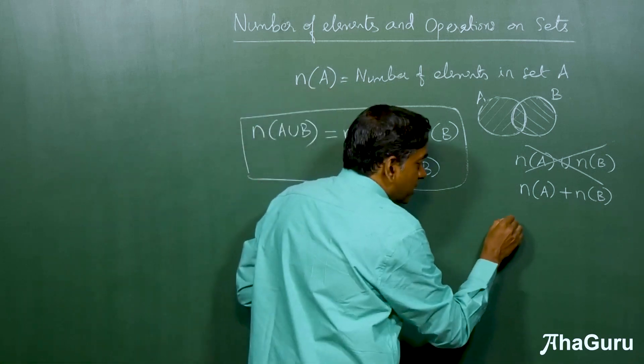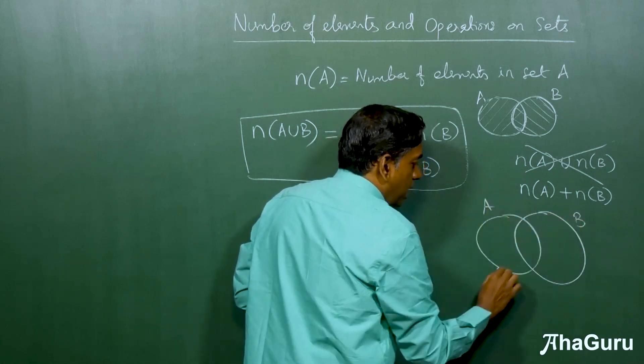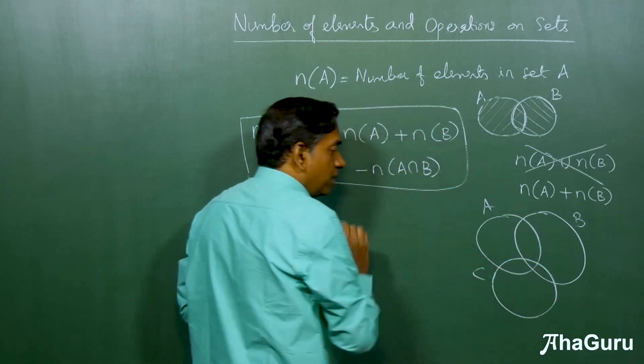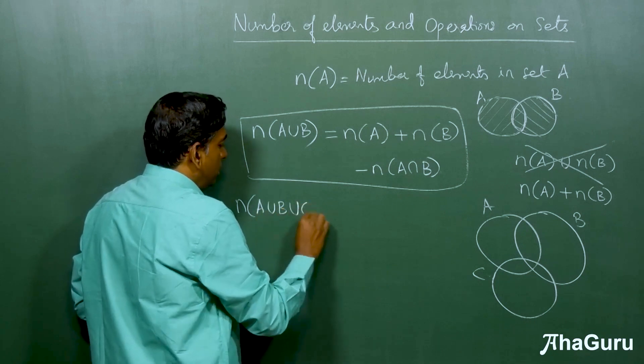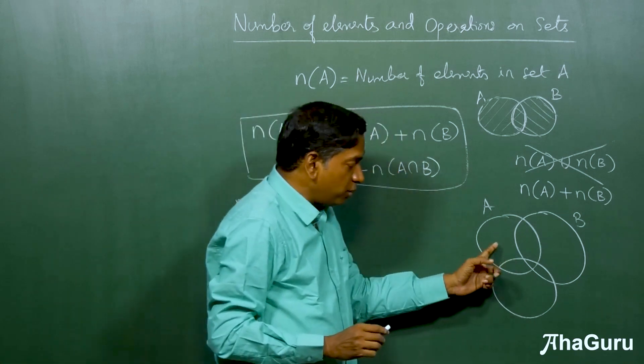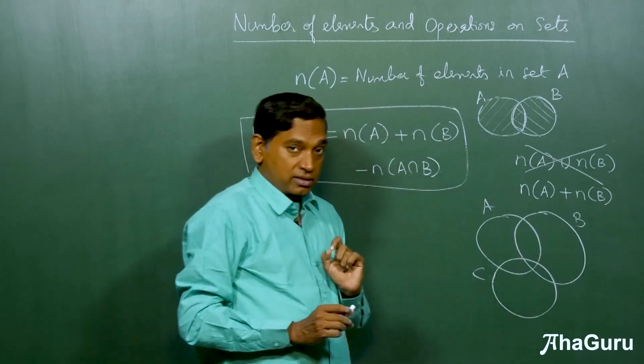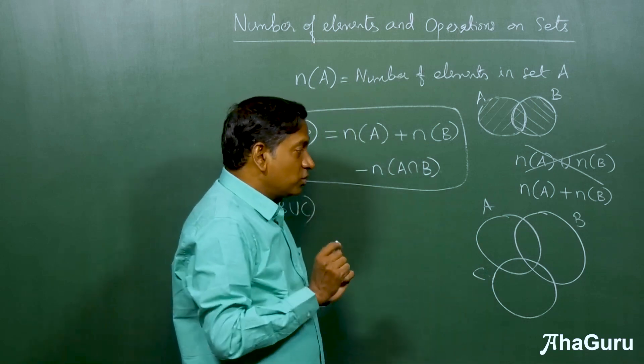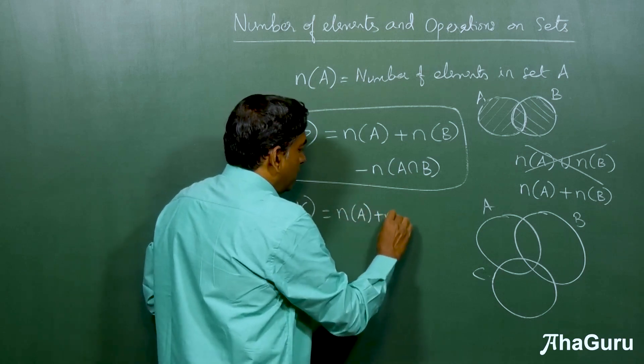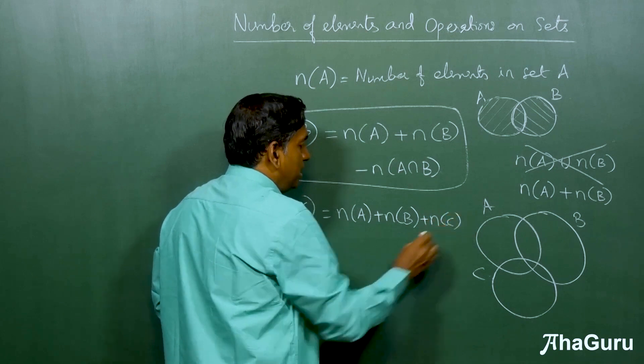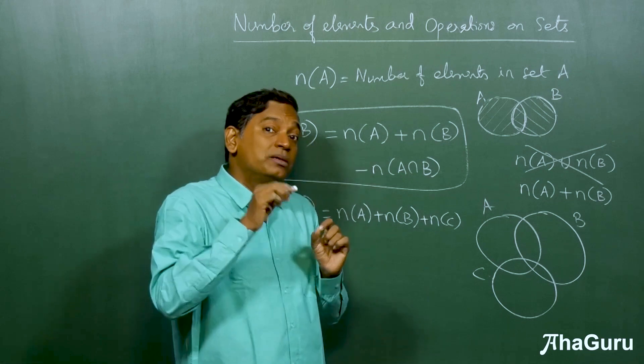Suppose you have three sets, A, B, and C. The question is, what is n(A union B union C)? What is the number of elements that is there in all the three put together? But here, you cannot double count. So our first guess will be, first let's add n(A), n(B), and n(C). But we know that that will double count many regions.